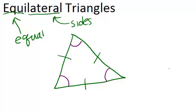And because the three angles in a triangle must add up to 180 degrees, each angle has to be 60 degrees, because that's 180 divided by 3.